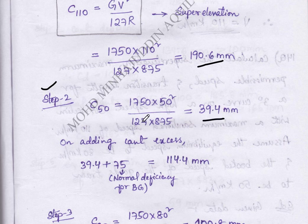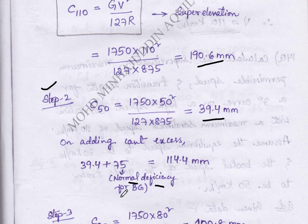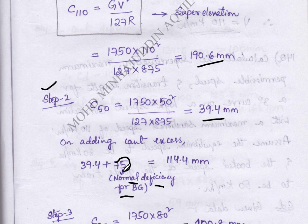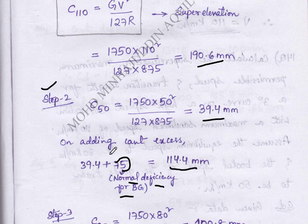But this is goods train, so we have to add normal deficiency for broad gauge value as 75. So 39.4 plus 75 which is equal to 114.4 mm.